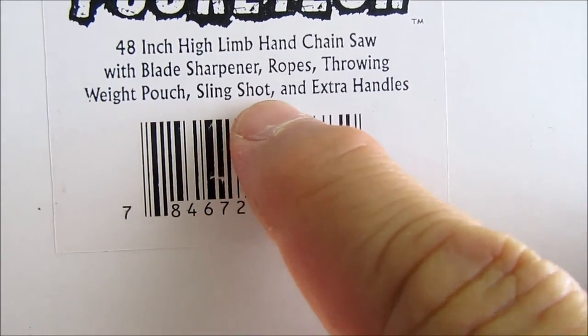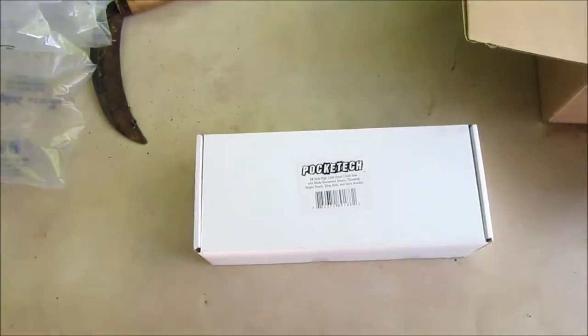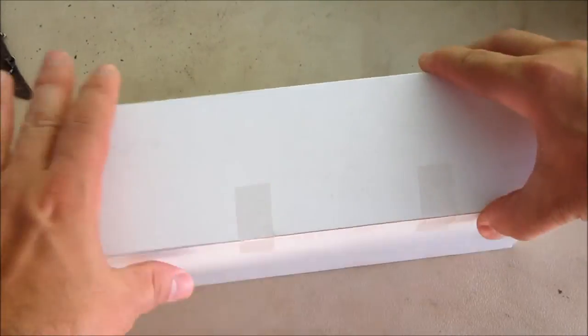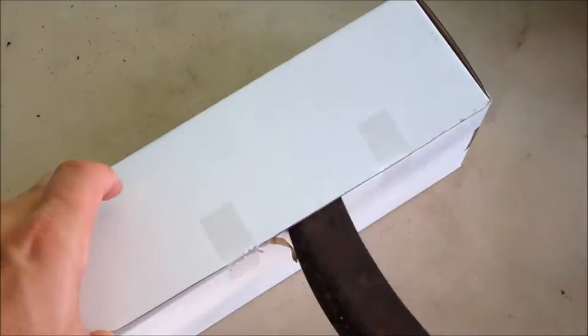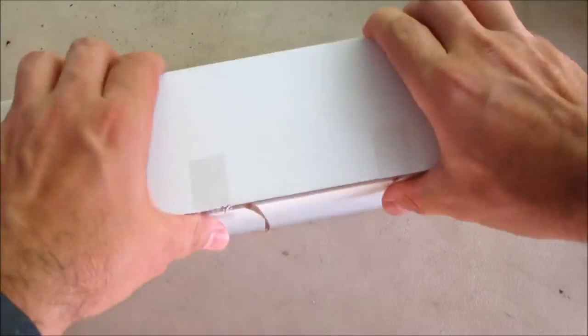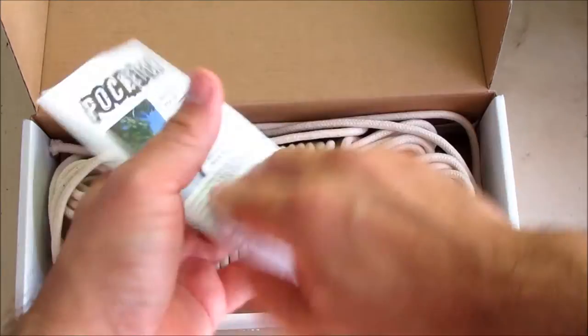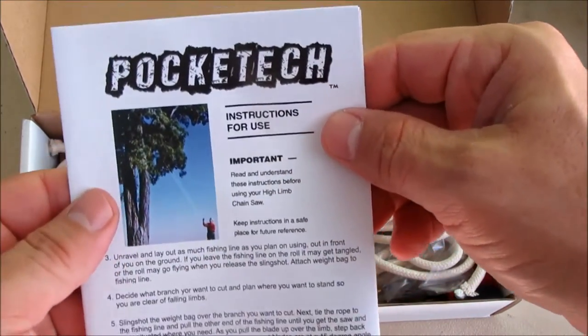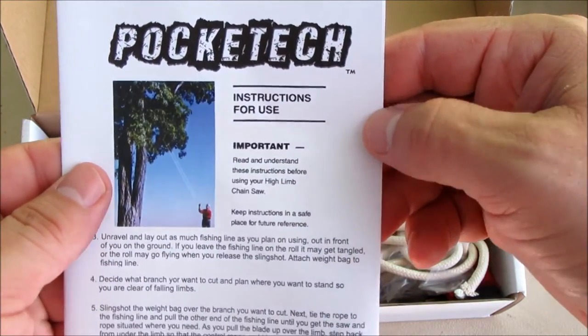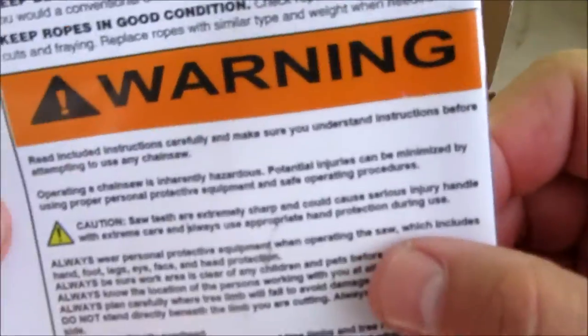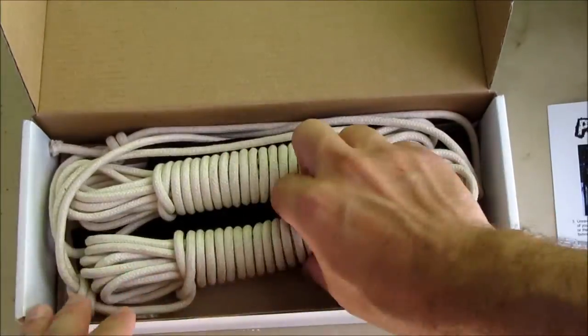Slingshot. Okay. Let's see here. More teeth on the bottom. Look at that. Instructions. Warning. Put it on the side. Rope.